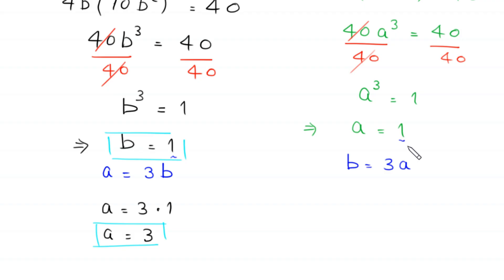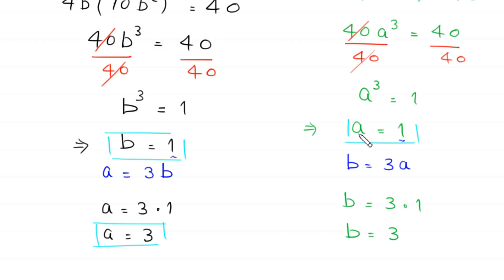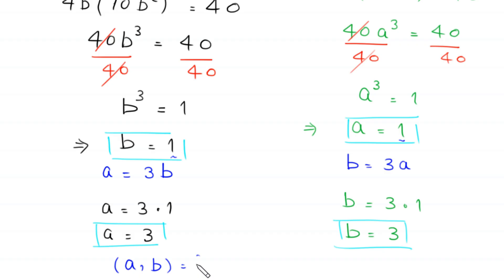To find b, we use b = 3a. When a = 1, b = 3 × 1 = 3. So for Case 2, when a = 1, b = 3. The final set of solutions is (a, b) = (3, 1) and (a, b) = (1, 3).